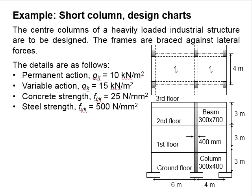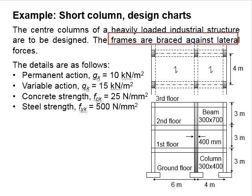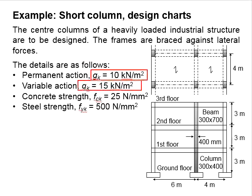Let's try an example to design the short column by using the design chart. The center columns of a heavily loaded industrial structure are to be designed. The frames are braced against the lateral forces. The loads are GK 10 kN per m², QK 15 kN per m². The concrete strength is 25 N per mm² and the steel strength is 500 N per mm².